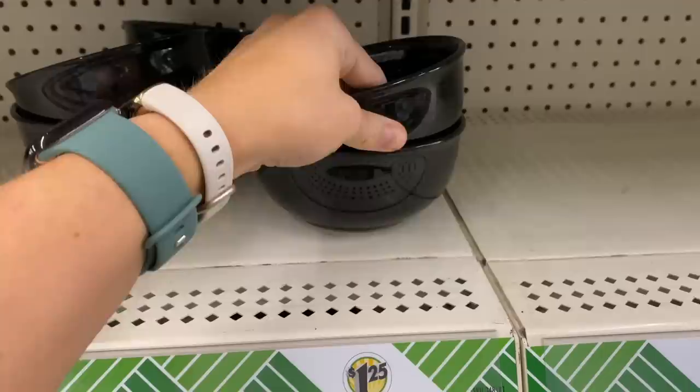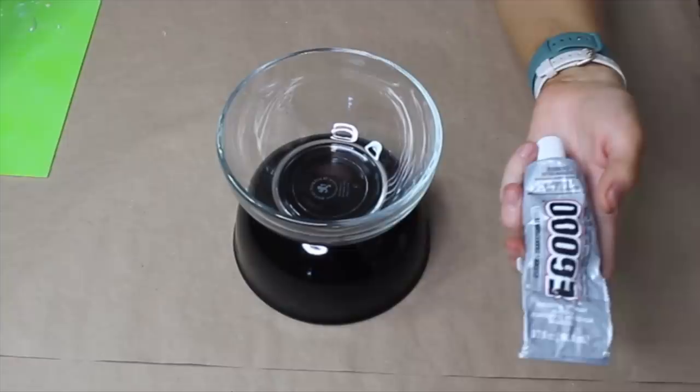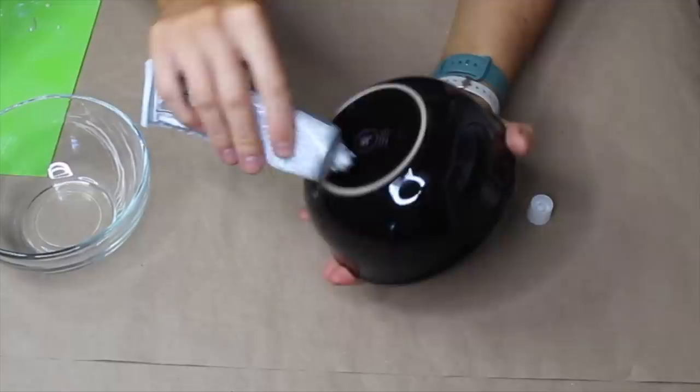We're going to start this project with two bowls. I got both of my bowls from the Dollar Tree. Essentially what we're trying to do is glue them base to base. I'm going to be using E6000 and my hot glue gun with Gorilla Glue sticks because they tend to hold things pretty well.